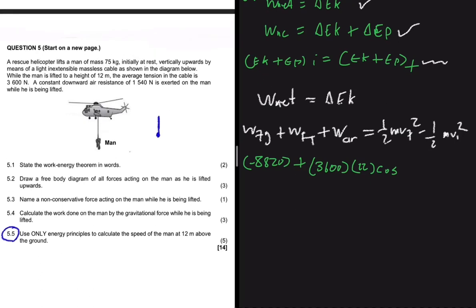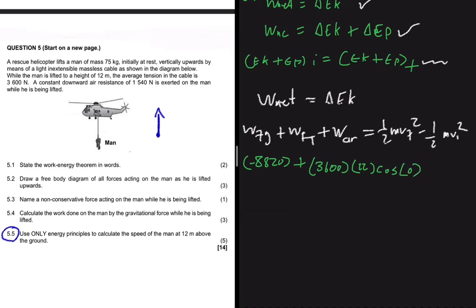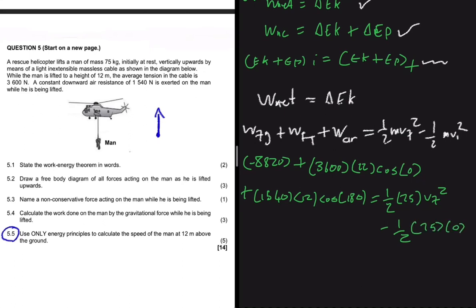For the air resistance: 1,540 × 12 × cos(180°), since the man is going up but air resistance acts downward — the angle between them is 180°. This equals ½ × 75 × Vf² minus ½ × 75 × 0², since the initial velocity is zero. The right-hand side simplifies to (75/2)Vf². Computing the left side gives us 15,900.